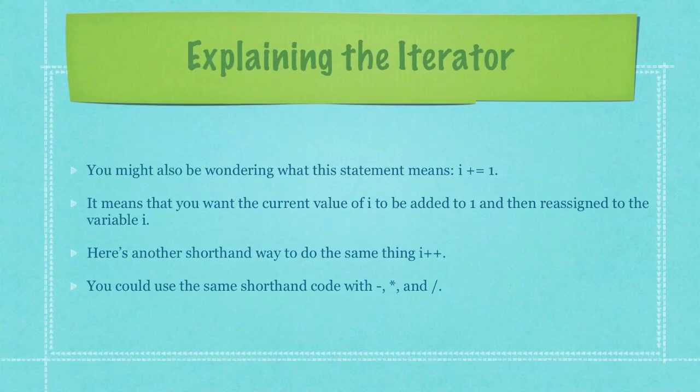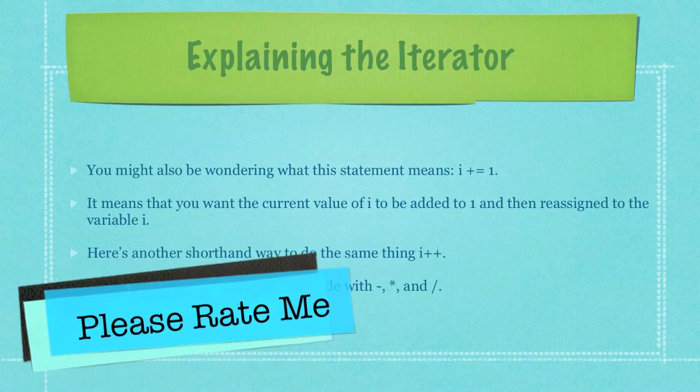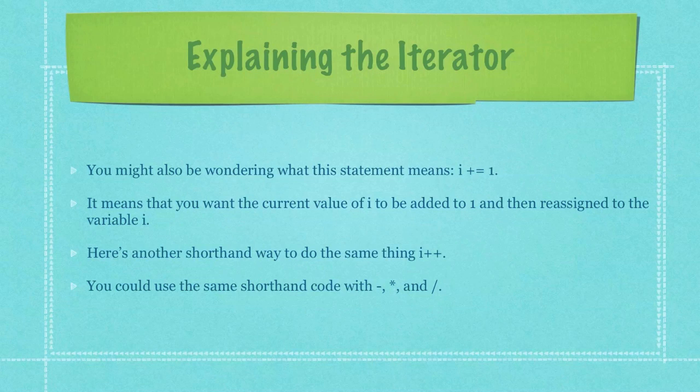You might also be wondering what this statement here means where I have i followed by a plus sign equals and then the number one. It means that you want the current value of i to be added to one and then reassigned back to the variable named i.